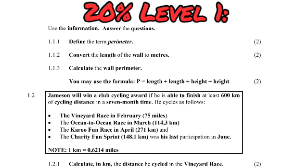In Paper 2, you can expect to calculate packaging, total surface areas, and work with measurement generally. Simple measurement questions appear in Question 1 as Level 1 questions. In Question 1.2, for example, there's a cycling scenario involving miles and kilometers, so your knowledge of the imperial system versus the metric system must be solid — you need to convert miles into kilometers.